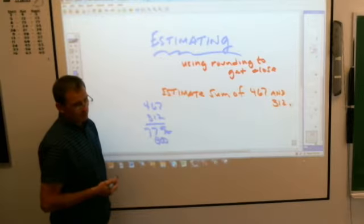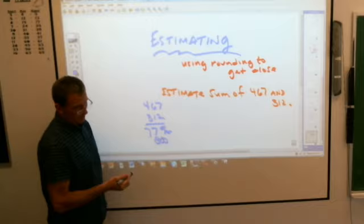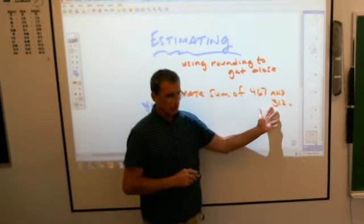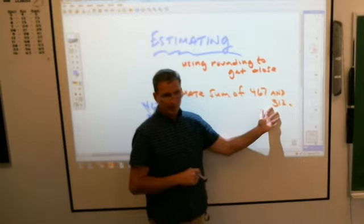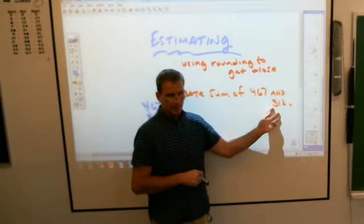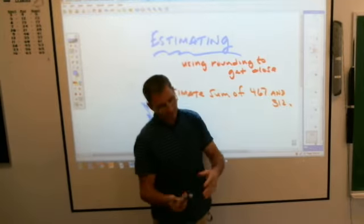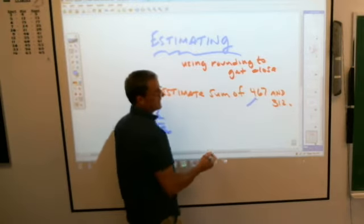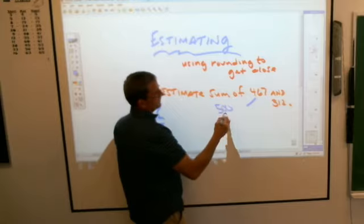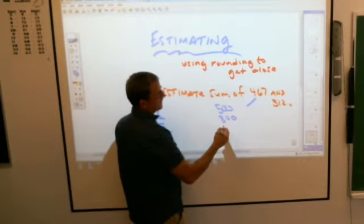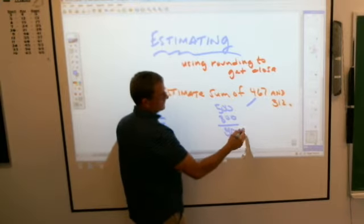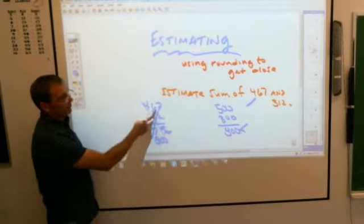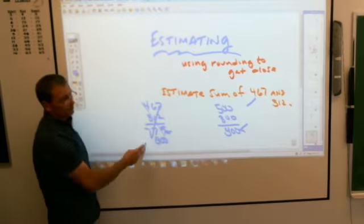If that was what it was asking you to do, it would say add and round your answer. What they're asking you to do is make these two numbers so easy that it's a really quick mathematical problem. So you round before you add as opposed to rounding them after you add. So you'd say, oh, 467, that's 500. 312, that's 300. And boom, 800 is your answer.